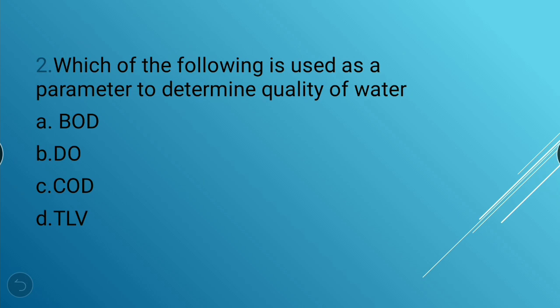Question 2: Which of the following is used as a parameter to determine quality of water? Options: BOD (biological oxygen demand), dissolved oxygen, chemical oxygen demand, and PLV. The answer is dissolved oxygen — it is used to determine the quality of water.